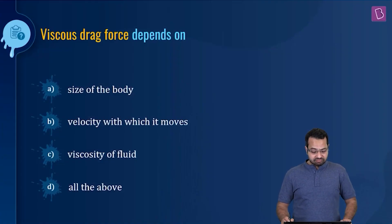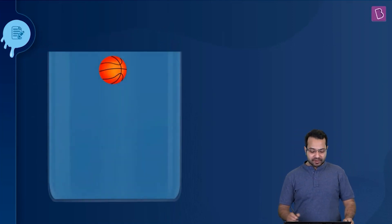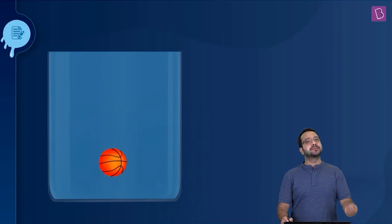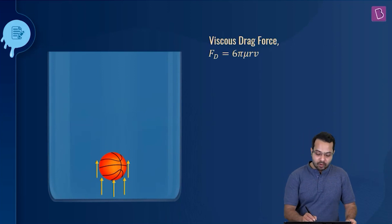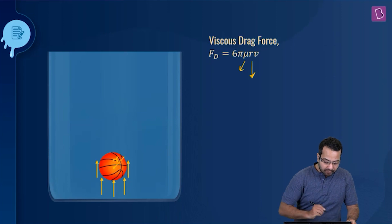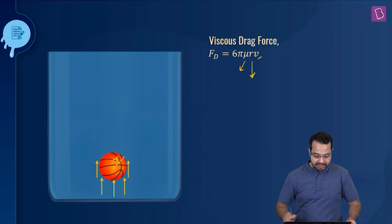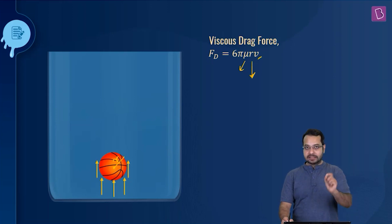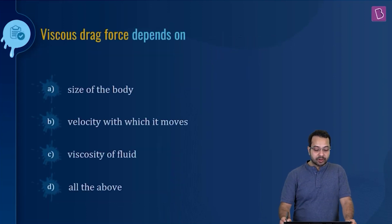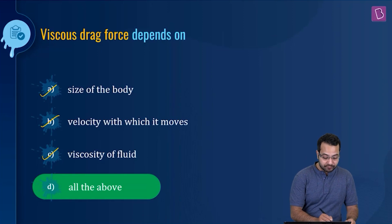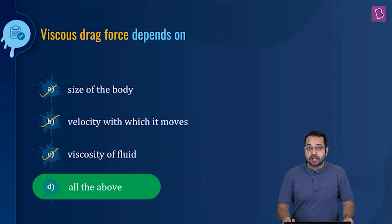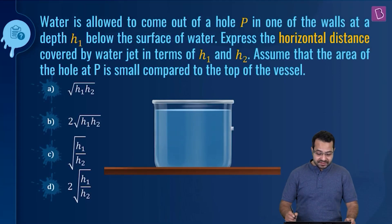Viscous drag force depends on: size of the body, velocity with which it moves, viscosity of fluid, or all of the above? When an object moves inside a viscous fluid, it experiences a drag force equal to 6πμrv, where μ is the viscosity of the fluid, r is the radius of the spherical object, and v is the speed. So size, velocity, and viscosity all contribute — correct option D, all of the above.